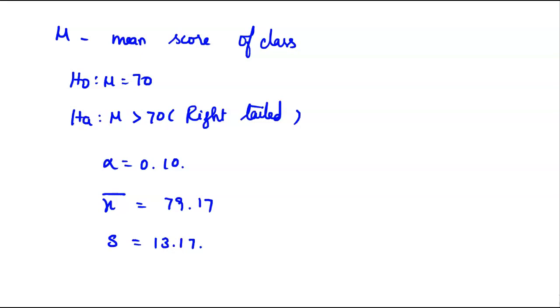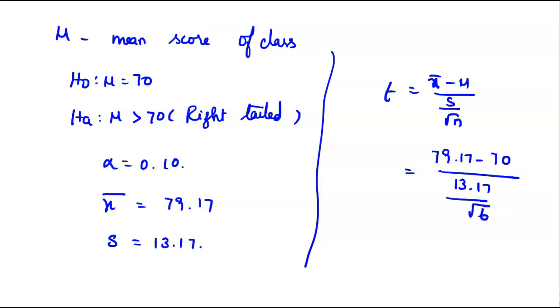Now we are going to use the t-test to analyze the problem. So t is equal to x bar minus mu divided by s by root n, which is equal to 79.17 minus 70 divided by 13.17 divided by root 6. Upon simplification we will get the value as 1.7055.